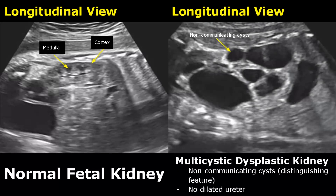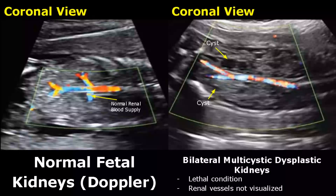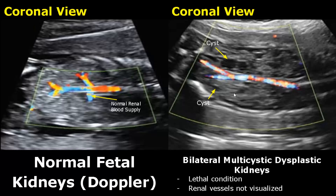In bilateral multi-cystic dysplastic kidney, both kidneys are non-functioning. Here we cannot see any renal vessels on color Doppler. It is a lethal condition.